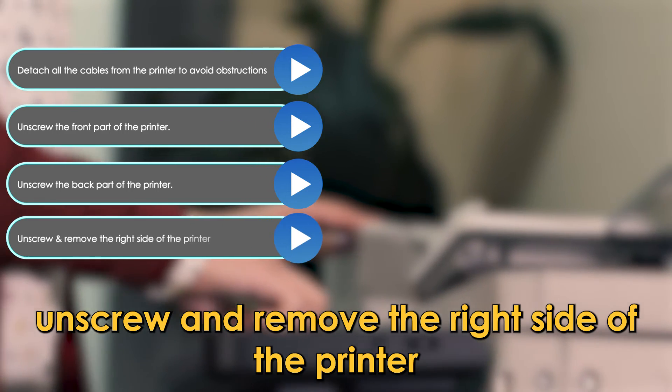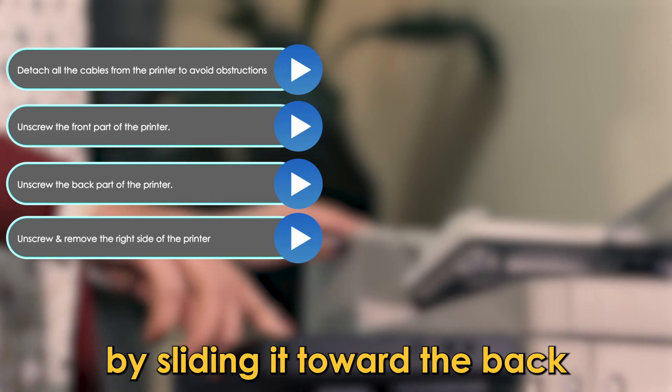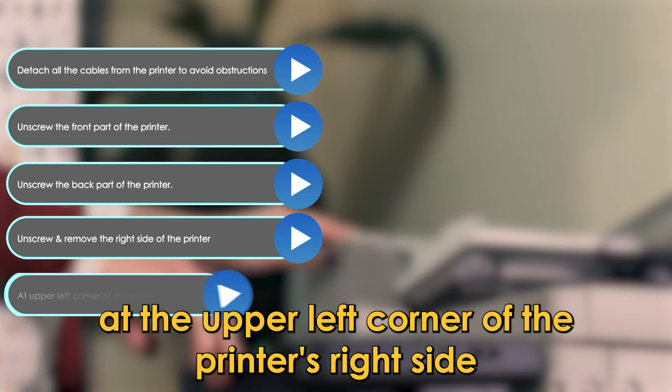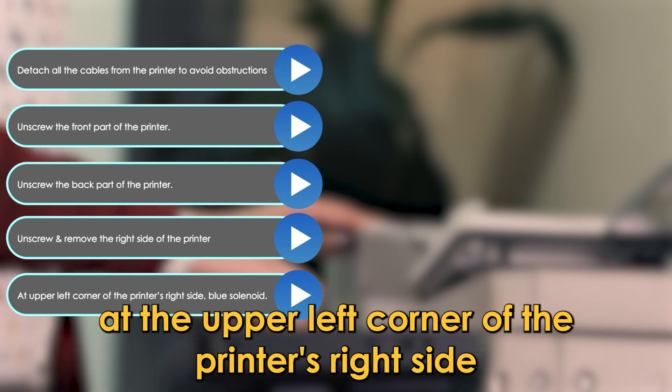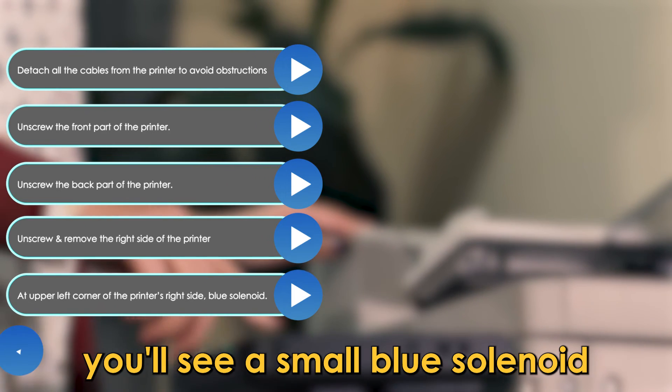Unscrew and remove the right side of the printer by sliding it toward the back. At the upper left corner of the printer's right side, you'll see a small blue solenoid.